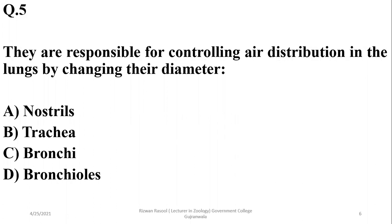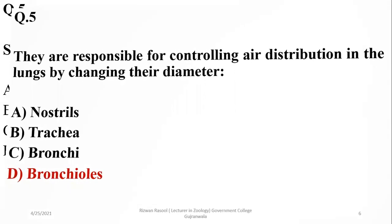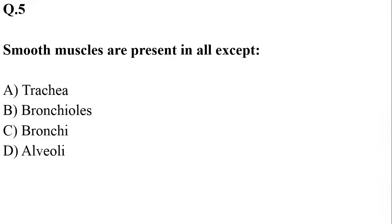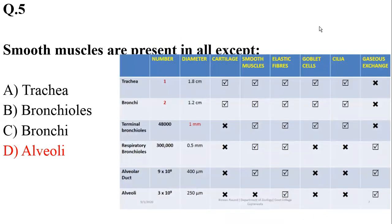Question five: bronchioles are responsible for controlling air distribution in the lungs by changing their diameter. Smooth muscles are present in all parts of the respiratory system — trachea, bronchioles, and bronchi — except the alveoli, which do not possess smooth muscles. So the correct option is delta.